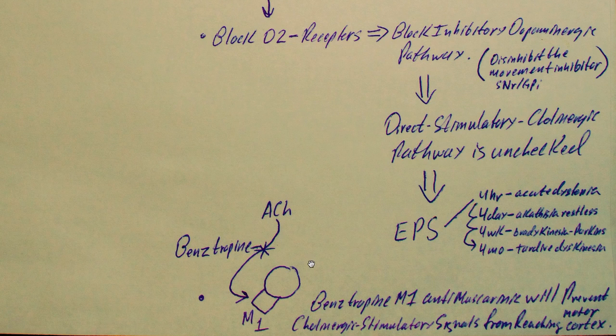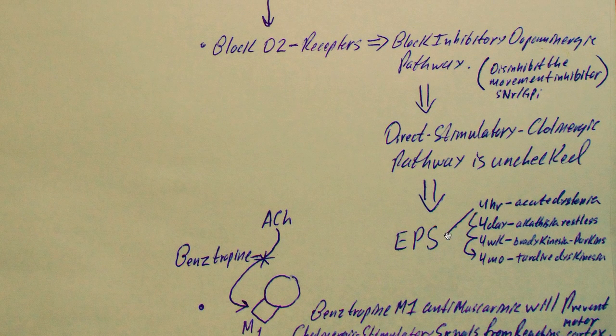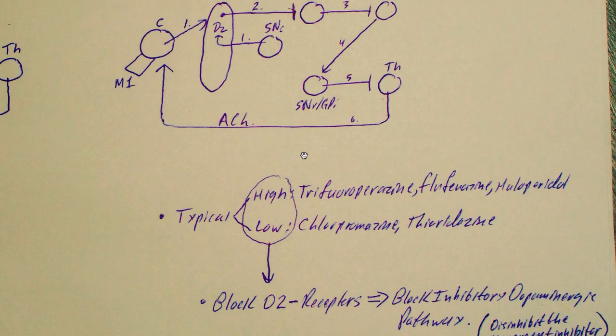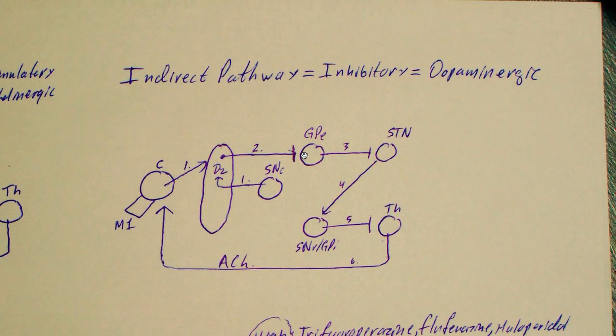So since they're blocking an M1 receptor, benztropine is going to be an M1 antimuscarinic. And that will prevent cholinergic stimulatory signals from reaching the motor cortex. Therefore, you're going to have a lot less of these movement issues associated with your typical antipsychotic. And that's all we have for now.